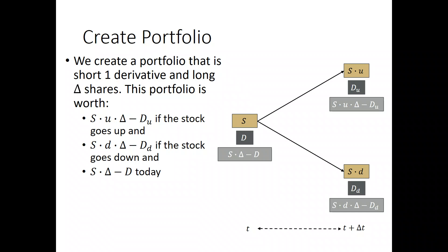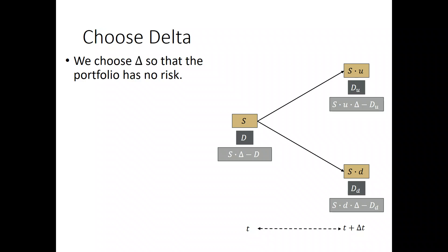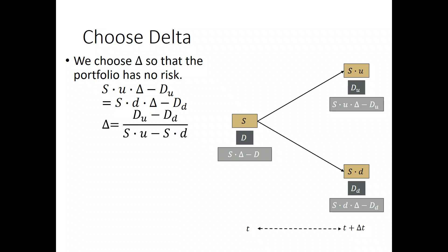What we do is make this a riskless portfolio so that we are indifferent to whether the stock goes up or goes down. We choose delta such that s times u times delta minus d sub u equals s times d times delta minus d sub d. Rearranging that equation, we get delta equals d sub u minus d sub d divided by s times u minus s times d. If you think about this carefully, that is a calculation of the slope of the derivative — d sub u minus d sub d would be the rise, and s times u minus s times d would be the run.